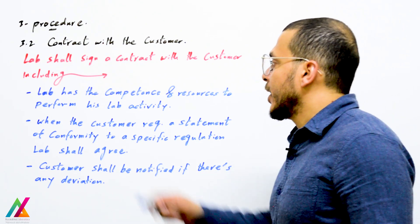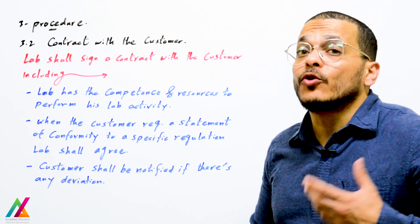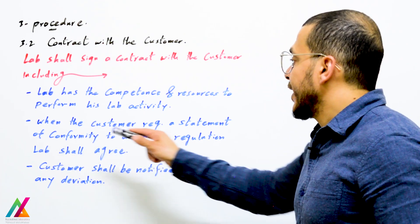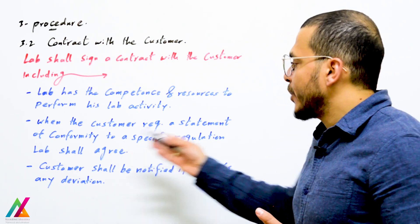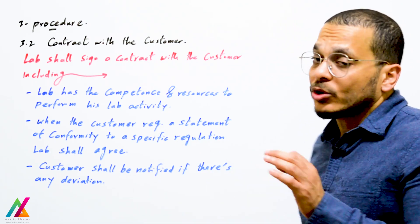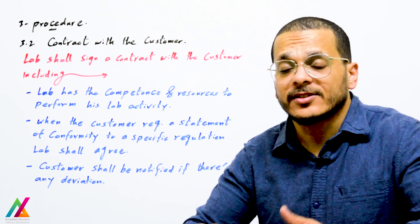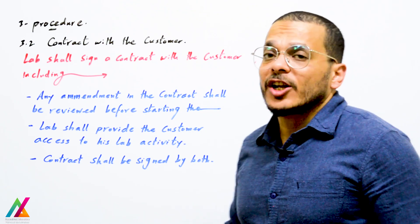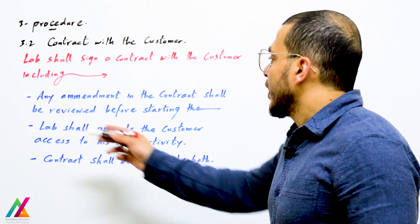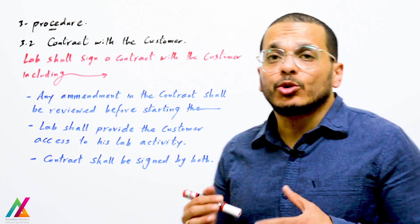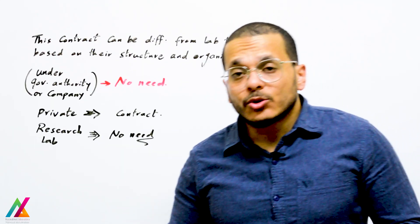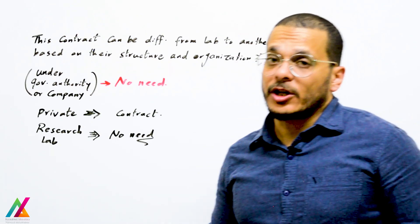The contract shall include: that the lab has the competence and resources to meet the customer's requirement and obtain valid results; when the customer requests a statement of conformity to a specific regulation, the lab shall agree, related to the decision rule; the customer shall be notified if there is any deviation in the contract before starting the lab activity; any amendment shall be reviewed and agreed by both parties; the lab shall provide the customer access to verify the performance of the lab activity; and the contract shall be signed by both parties. Note that this contract may differ from lab to lab based on their structure and organization.